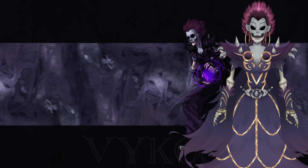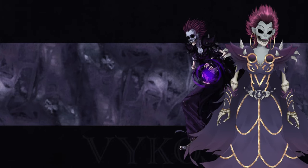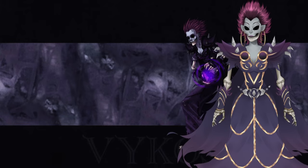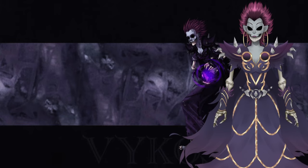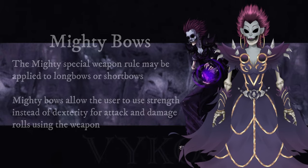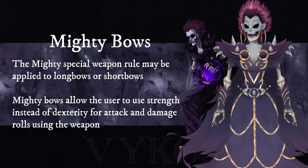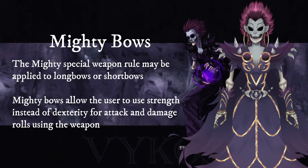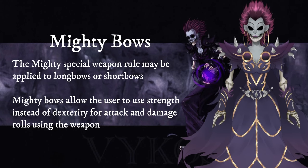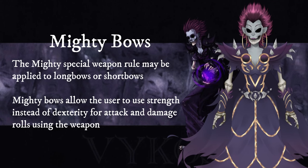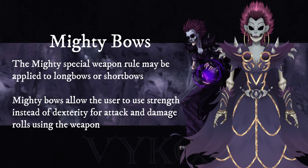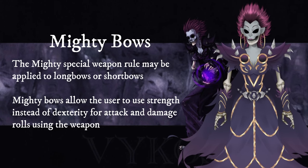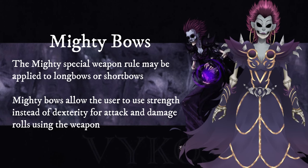Before we get into it, let's quickly cover a special weapon rule that may pop up. Mighty is a special rule that can be applied to bows but not to crossbows or other weapons. It represents a large bow with a particularly massive draw that favors the strong. With a mighty weapon, you may choose to substitute Strength for Dexterity when using the weapon — basically the inverse of finesse.